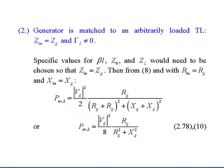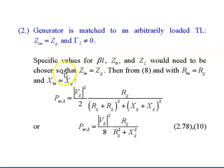Case 2: The generator is matched to an arbitrarily loaded transmission line, meaning Z_in equals Z_g instead of Z_0. The reflection coefficient will not be zero anymore. Specific values of βL, Z_0, and Z_L must be chosen so that Z_in equals Z_g. In this case, R_in equals R_g and X_in equals X_g.